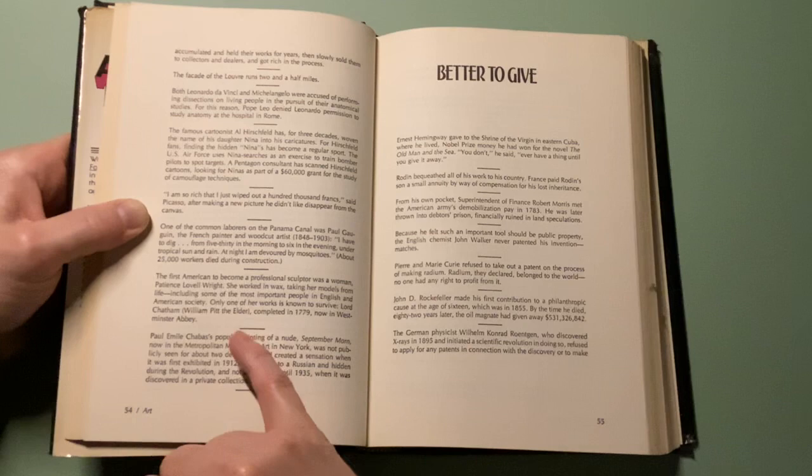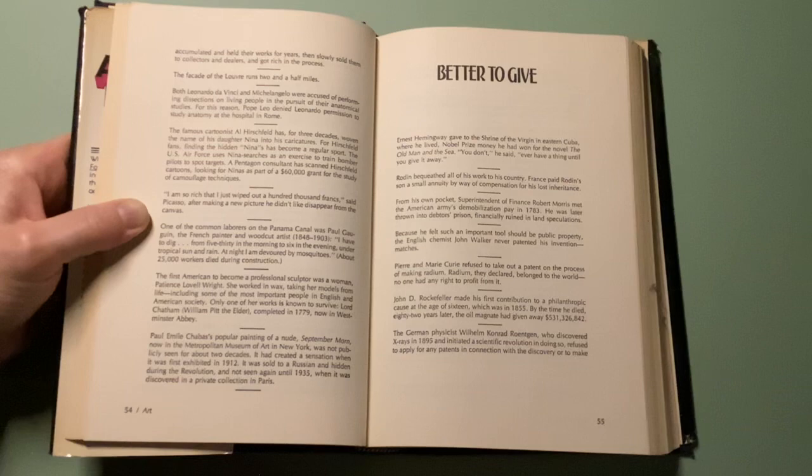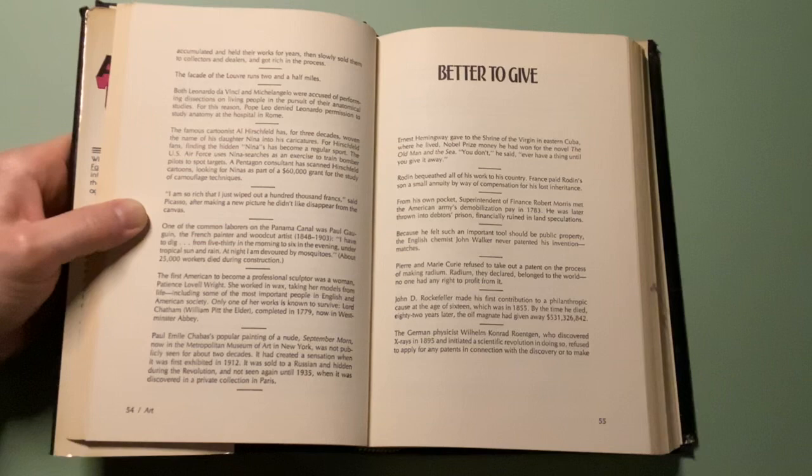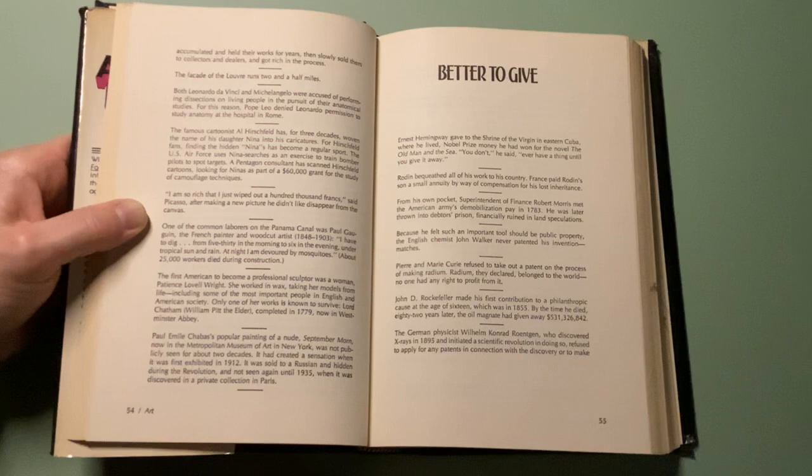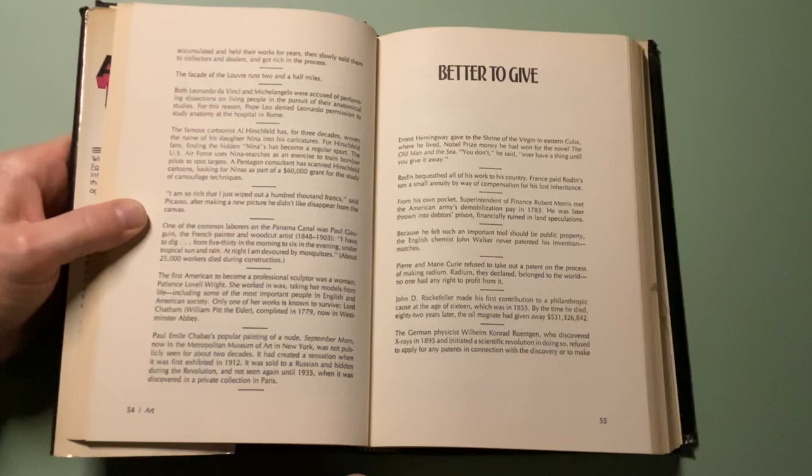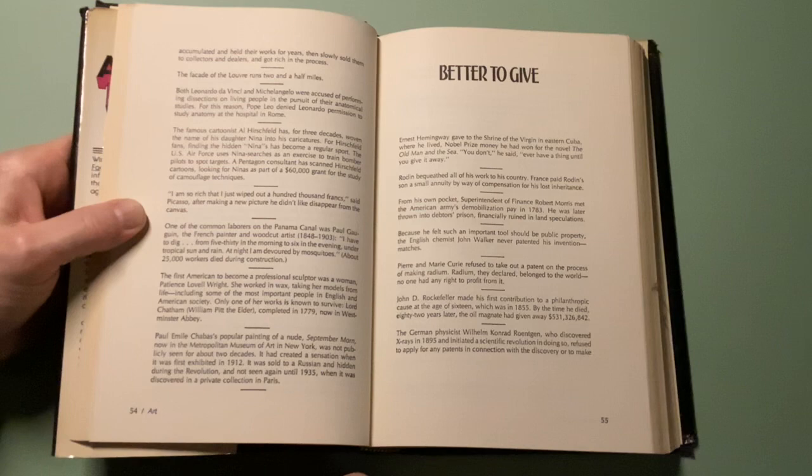Paul Émile Chabas's popular painting of a nude, September Morn, now in the Metropolitan Museum of Art in New York, was not publicly seen for about two decades. It had created a sensation when it was first exhibited in 1912. It was sold to a Russian and hidden during the revolution and not seen again until 1925 when it was discovered in a private collection in Paris.